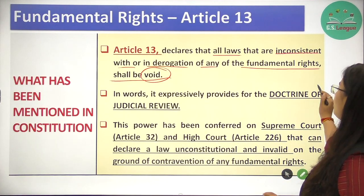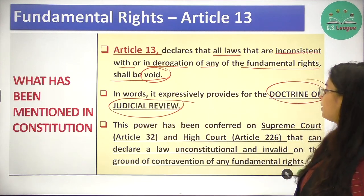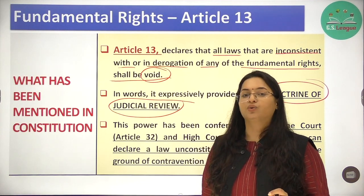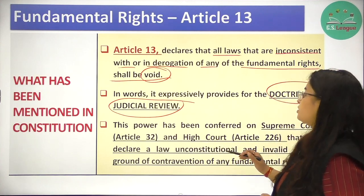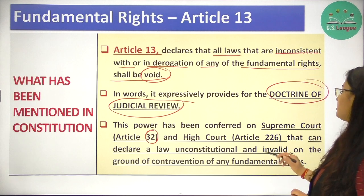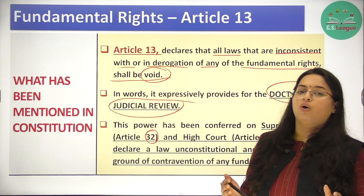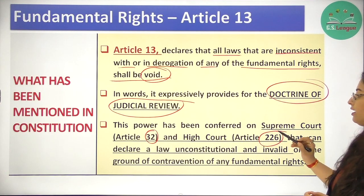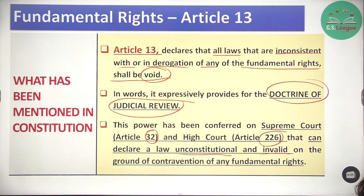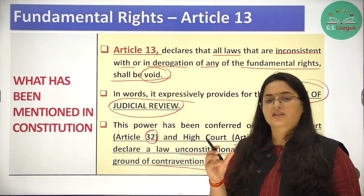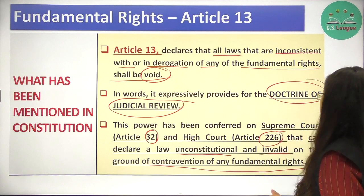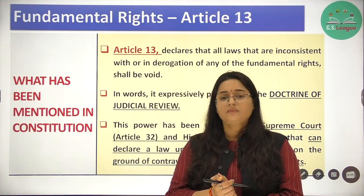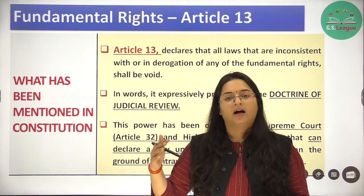Article 13 expressly provides for the doctrine of judicial review. This power has been conferred on the Supreme Court under Article 32 — which is constitutional remedies. The High Court has this power under Article 226. They can declare a law unconstitutional and void if the law is inconsistent with fundamental rights — on the ground of contravention of any of the fundamental rights.